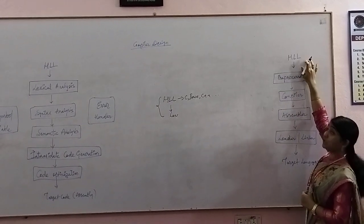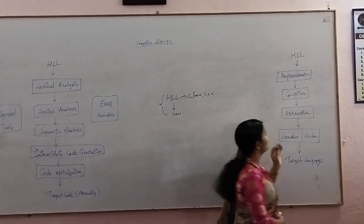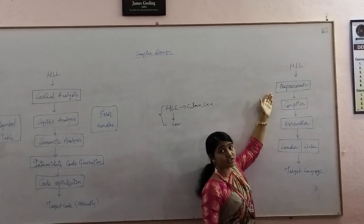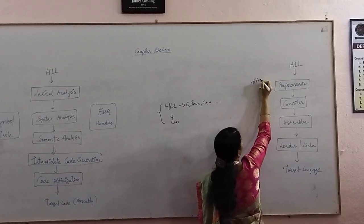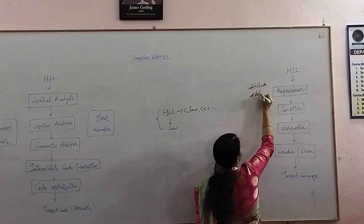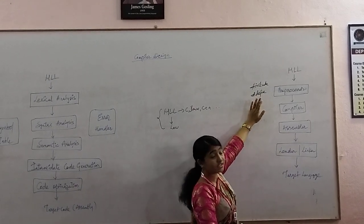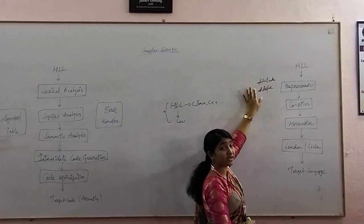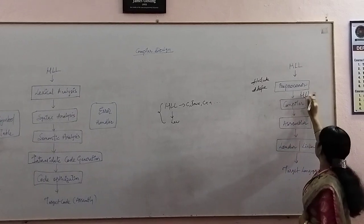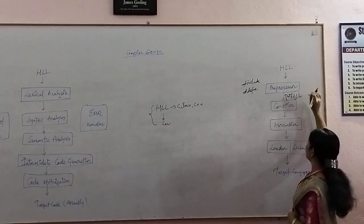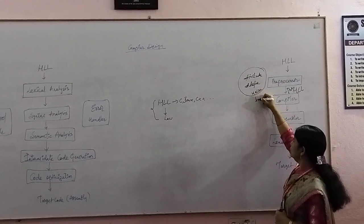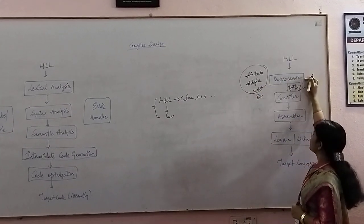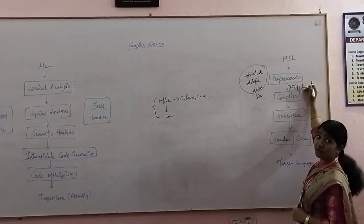High level language is the code which is directly written by a user. The user writes a Java program or C program, and that is the high level language. That high level language is given to the preprocessor. The preprocessor converts statements like hash include and hash define. These files are included, replaced by the particular files, and then get converted into pure high level language after macro expansion or file inclusion.